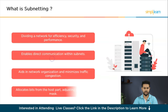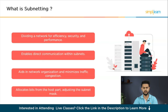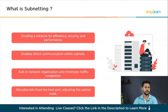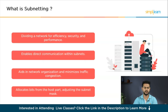In the process of subnetting, certain bits from the host part of an IP address are allocated to signify the subnet, leading to adjustments in the subnet mask. The subnet mask, presented as a binary number, delineates which bits of the IP address belong to the network and which pertain to the host. For instance, a subnet mask of 255.255.255.0 indicates that the initial 24 bits of the IP address represent the network, while the remaining 8 bits represent the host.